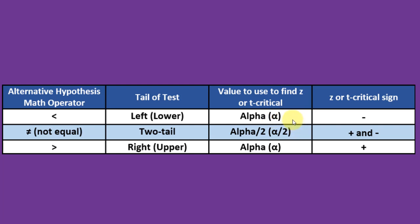If the operator in the alternative is not equal, that's a two tail test, and you put alpha over two in each of those two tails. If the math operator in the alternative is a greater than symbol, remember it's pointing to the right. That means it's a right or upper tail test, and alpha over two would be in that tail of the test.